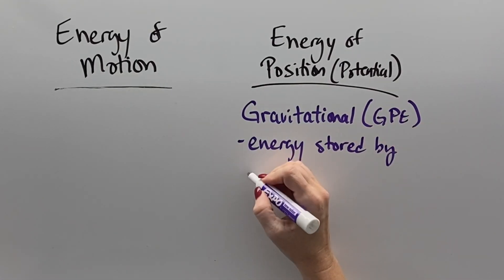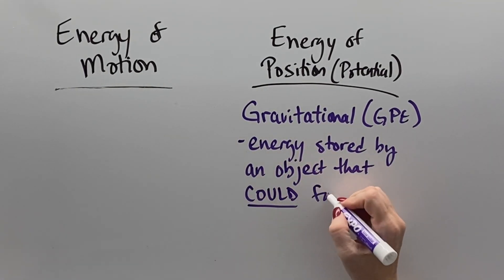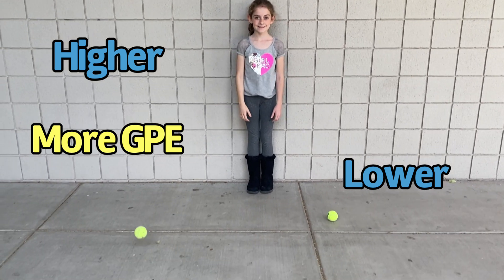Gravitational potential energy is energy stored as a virtue of just the fact that an object could fall. Objects that can fall farther have more energy, which is usually transferred into greater motion than objects that are closer to the ground.